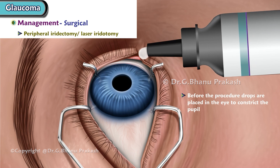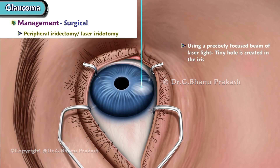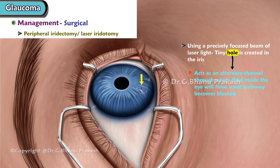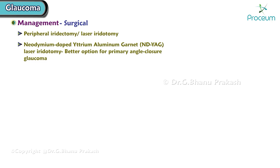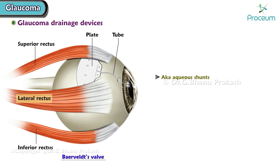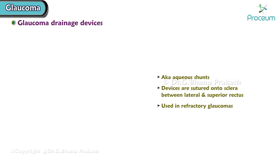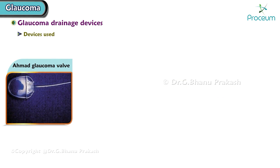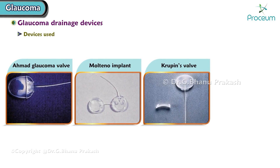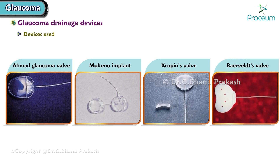Peripheral iridectomy / Laser iridotomy: drops are placed in the eye to constrict the pupil. Using a precisely focused laser beam, a tiny hole is created in the iris. This hole acts as an alternate channel for fluid flow if the usual pathway becomes blocked, and will not affect vision. Nd:YAG laser iridotomy is a better option for primary angle closure glaucoma. Glaucoma drainage devices, also known as aqueous shunts, are sutured onto the sclera between the lateral and superior rectus muscles and are used in refractory glaucoma cases. Devices used include the Ahmed glaucoma valve, Molteno implant, Krupin valve, and Baerveldt valve.